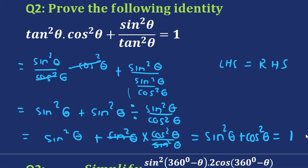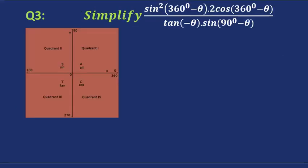The left hand side is also equal to 1. So before we simplify this next expression, we need to know that all of our ratios are positive in the first quadrant. Sine is the only ratio that's positive in the second quadrant. Tangent is the only ratio that's positive in the third quadrant. And cosine is the only ratio that is positive in the fourth quadrant.